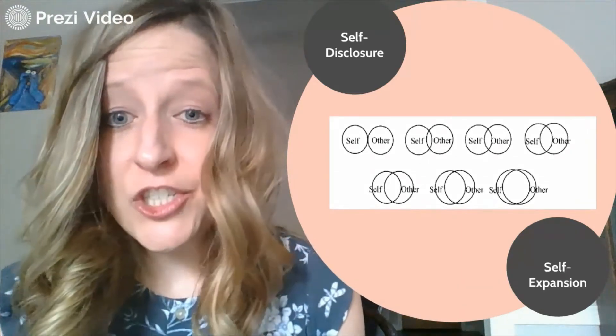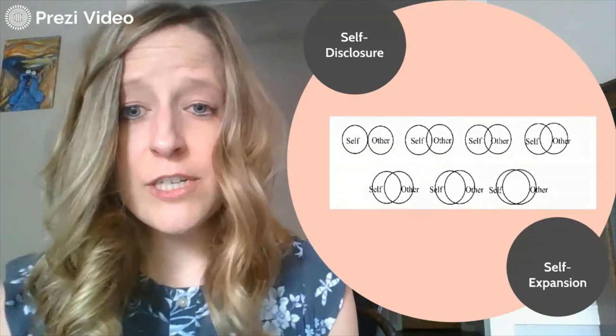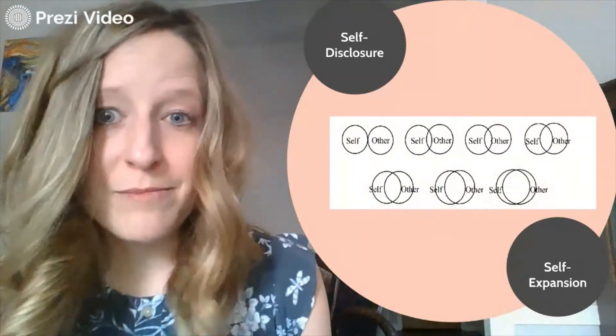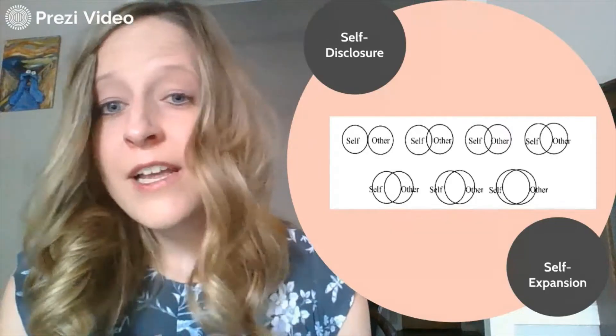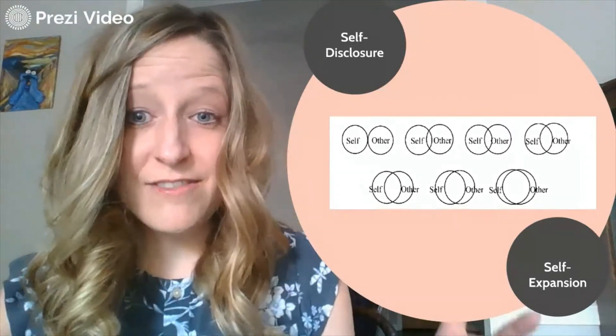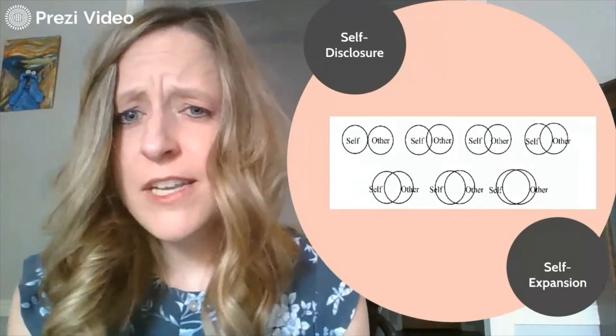Sadiqus in 1992 found that individuals in close relationships used a broader range of domains to describe themselves, suggesting a more expanded sense of self that could be due to being in close relationships.